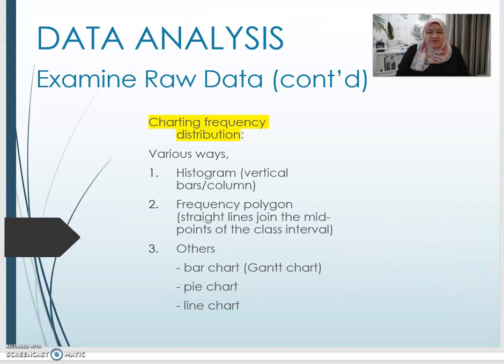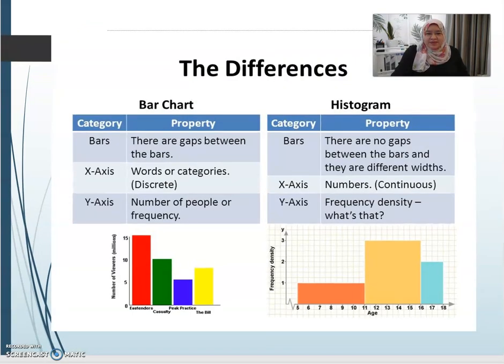Charting the frequency distribution table, you can use histogram, frequency polygon, or you can use the common chart, bar chart, or line chart. This is an example of the bar chart. Here is a bar chart and this is a histogram. I'm sure the students know the difference between these two types, but there's an explanation there. Basically, the chart looks like this.